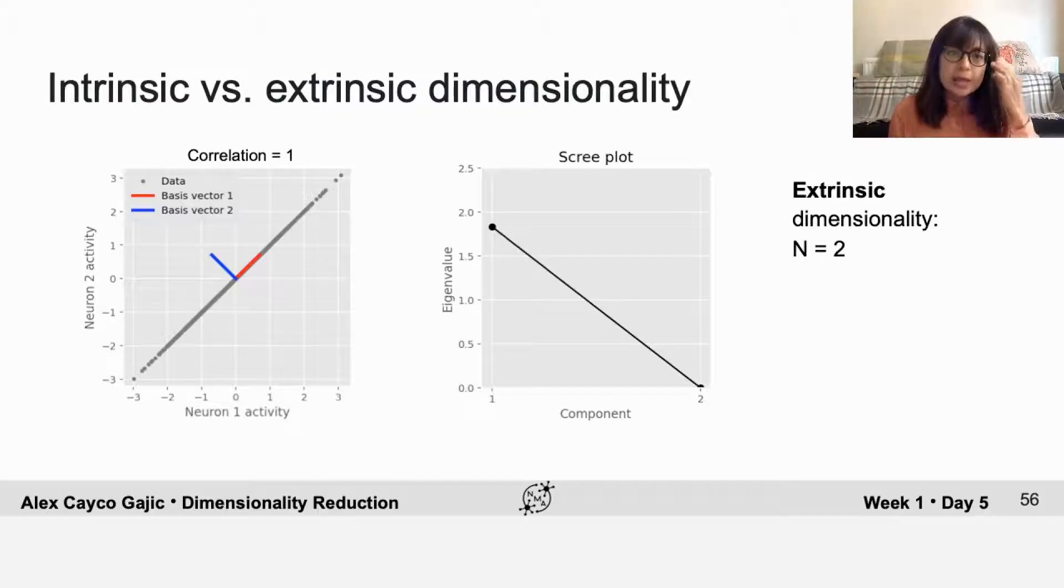The intrinsic dimensionality is the number of degrees of freedom in our data. You can see on the left that in this case, since the activity of neuron 1 and 2 are so perfectly correlated, there's actually only one degree of freedom because you only need one coordinate to describe all of the data. That's the projection onto the first basis factor.